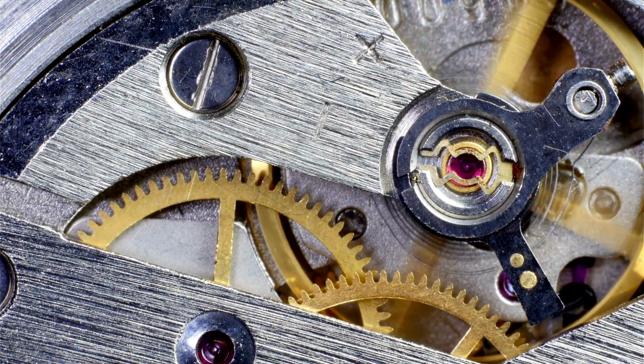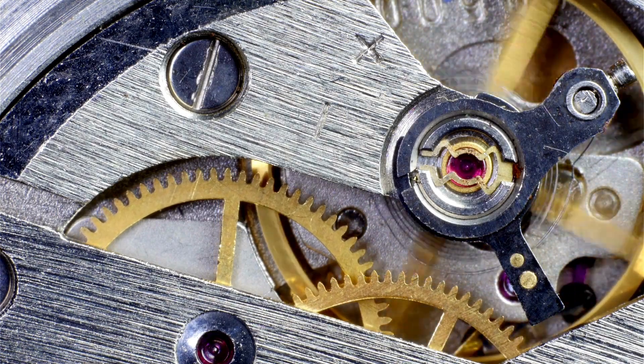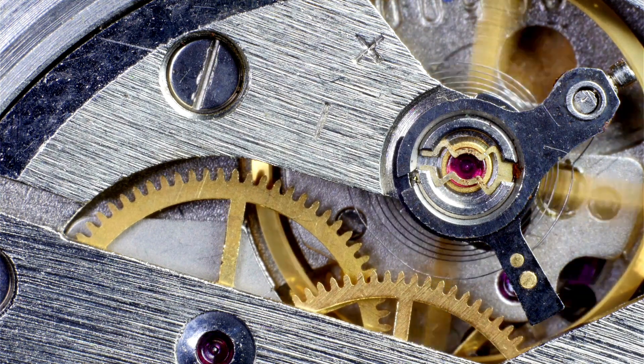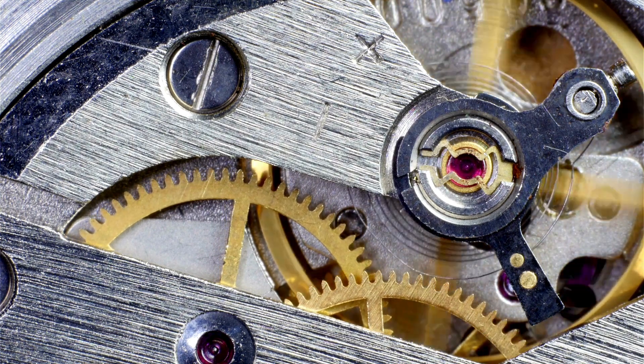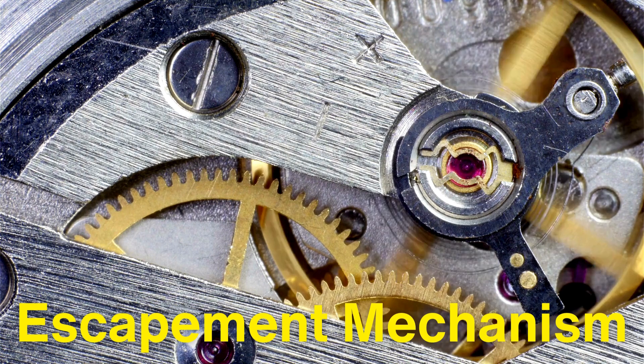Now, while the mainspring provides energy, this energy must be released in a precise, regulated manner to ensure the watch keeps accurate time. This is where the escapement mechanism comes into play.